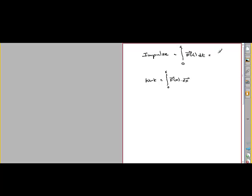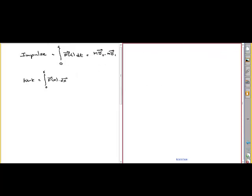Impulse is a vector because it's equal to the change in momentum: m times v2 minus m times v1, assuming mass doesn't change, which is the case for most problems. There are two problems — number 11 and number 14 — which involve calculus.